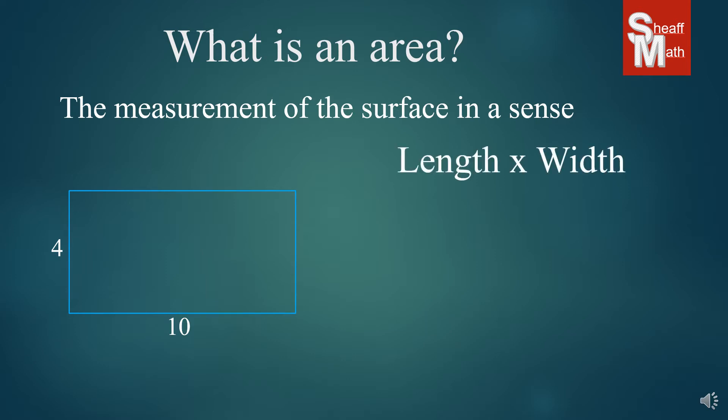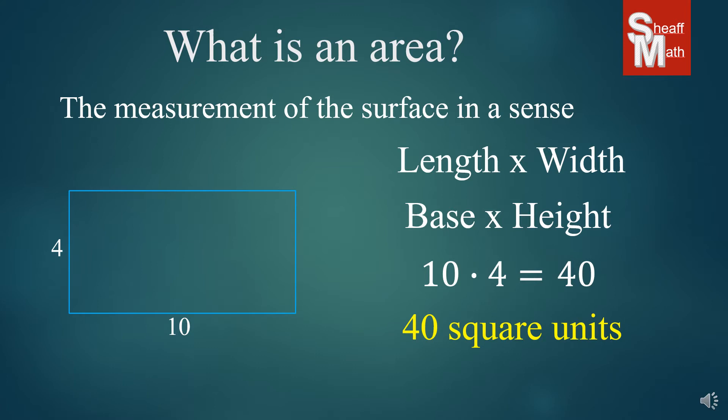Now, the formula is length times width, so this is really easy. You just multiply the length times the width, which is also known as the base times height. It's 10 times 4, and that equals 40. How we write it is 40 square units, but if you want to shortcut it, you can put 40 units squared, like that.